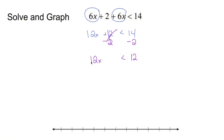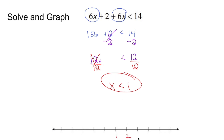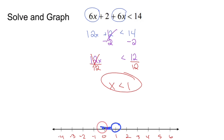Is x all by itself? No — 12 is being multiplied to it. The inverse of multiply 12 is divide 12, so divide 12 from both sides. That crosses out. Drop down x, drop down less than, drop down 1 — and I have my answer. Now put 1 on the number line and fill in all the numbers. Since x is less than 1, put a circle at 1 and don't fill it in, because we're not allowed to include 1. Since x is everything smaller than 1, shade everything to the left of 1. Any number covered by this blue shading — like negative 2 or negative 1,000 — plugged into the original equation will end up being less than 14.